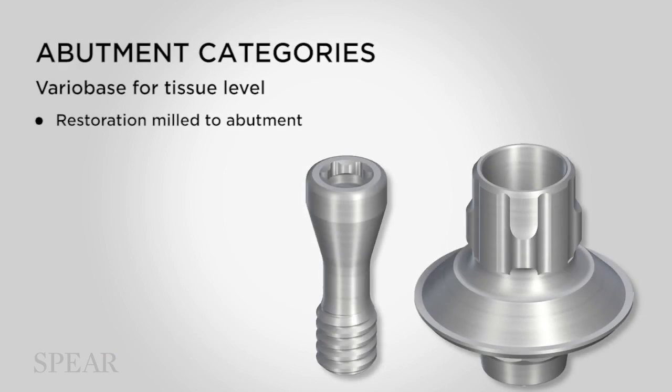There's also a vario base for tissue-level implants. If you look at the image, you'll see the broad platform at the bottom of that vario base abutment — it's going to completely cover the tissue-level platform. This abutment works the same as the bone-level abutment: the chimney is milled to fit the top of the abutment, cemented in place, and the crown is then milled or pressed, waxed and pressed, to fit the chimney and then cemented in place.